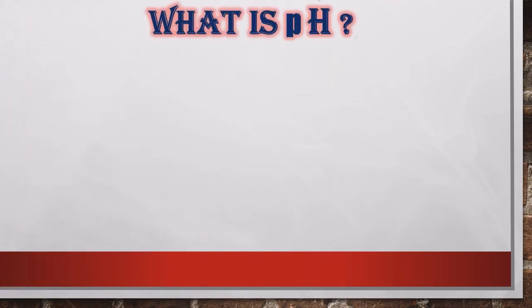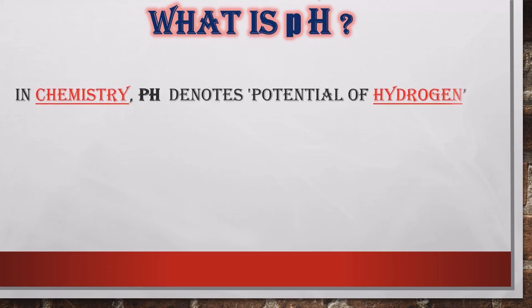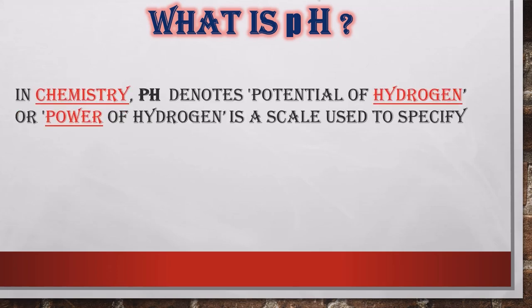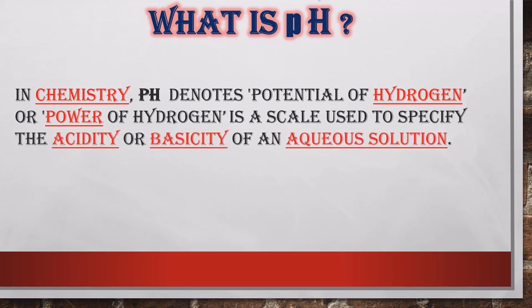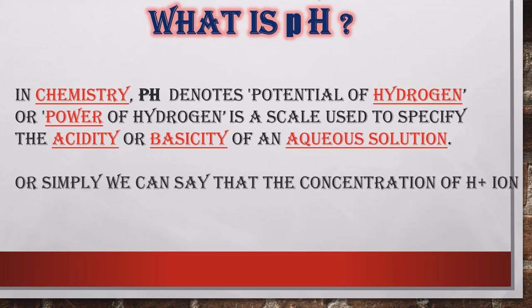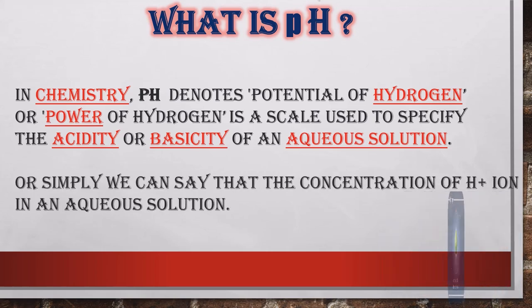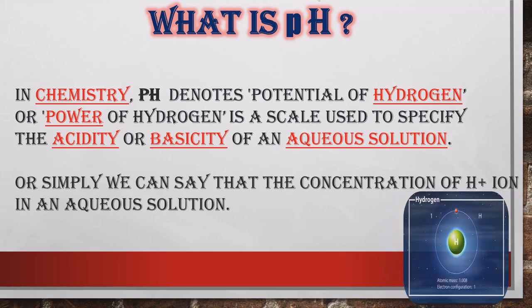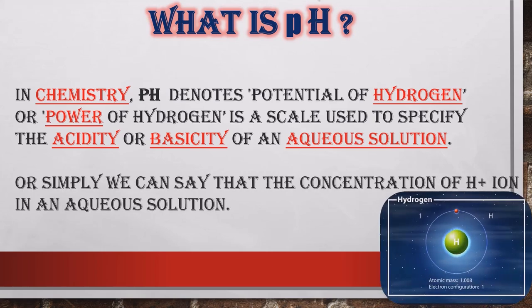What is pH? In chemistry, pH denotes potential of hydrogen or power of hydrogen. It is a scale used to specify the acidity or basicity of an aqueous solution, or simply we can say that it measures the concentration of H⁺ ions in an aqueous solution.